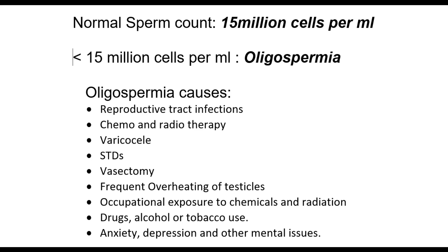Sperm count above 15 million cells per ml of semen is considered normal. Sperm count below 15 million cells per ml, also known as oligospermia, is one of the leading causes of male infertility. Oligospermia can have a variety of causes such as infection and other medical conditions in the reproductive tract or testes, chemo and radiotherapy, varicocele, STDs, vasectomy, frequent overheating of testicles, occupational exposure to chemicals and radiation, drugs, alcohol or tobacco use, anxiety, depression, and other mental issues.